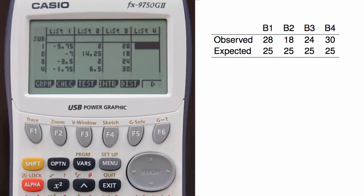Next, we need to enter another list with the expected values for each of these bins. Here we expect the four bins to have equal probability and there are 100 observations, so we expect a count of 25 in each bin.